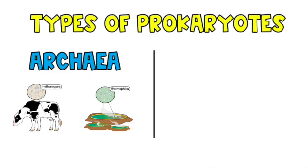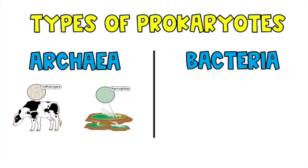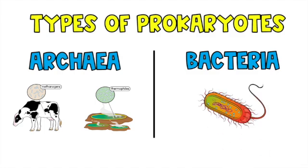Thermophiles live in extreme heat — they love heat and are able to live in places that a lot of other organisms can't. You know about bacteria; we always think of bacteria as bad, the types of things that get us sick. However, there's a lot of bacteria that's good for us — it's in our stomach, our digestive system, our mouth, and it can help us digest food, break down food, and get nutrients out of it.